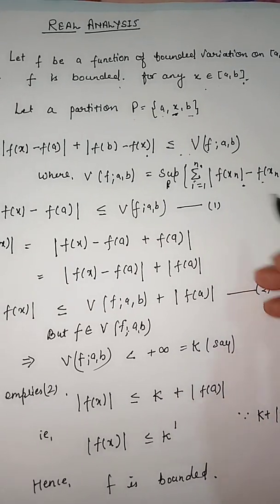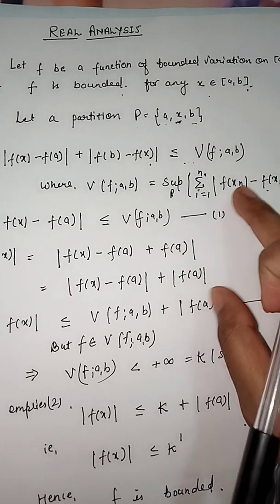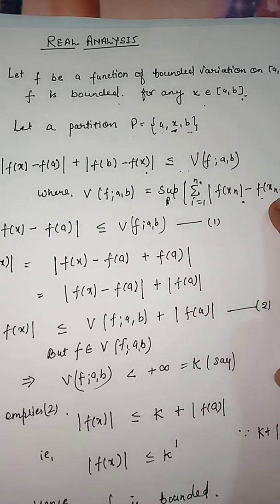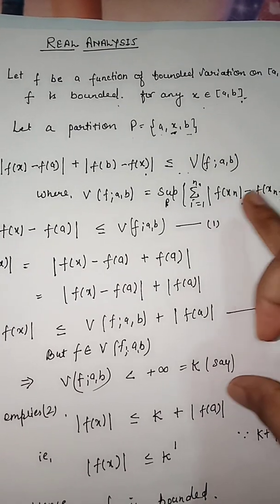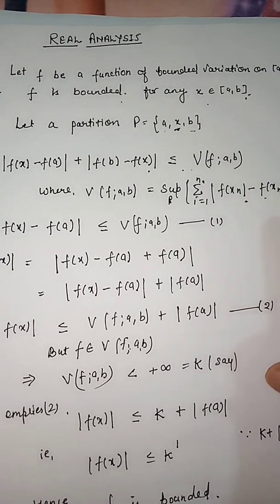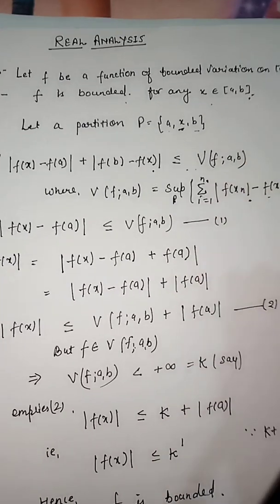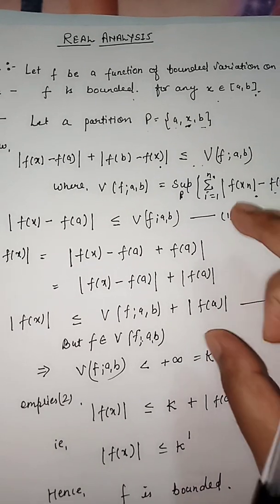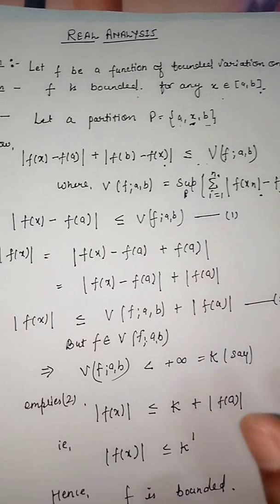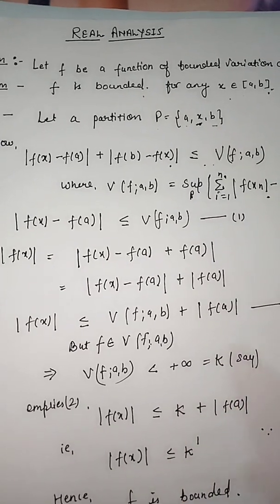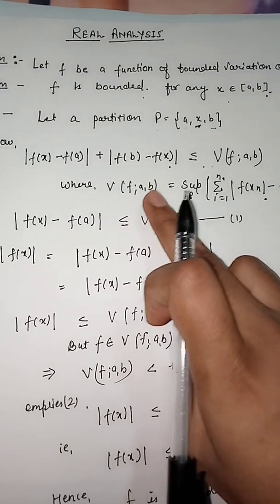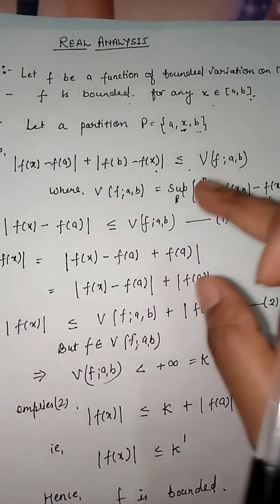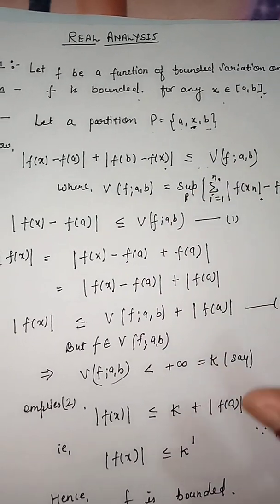We take the difference f(x_n) - f(x_{n-1}), which is finite. After proving the theorem, we will find some finite number such that the variation of the function is less than that finite number, which allows us to conclude that f is a bounded variation function.